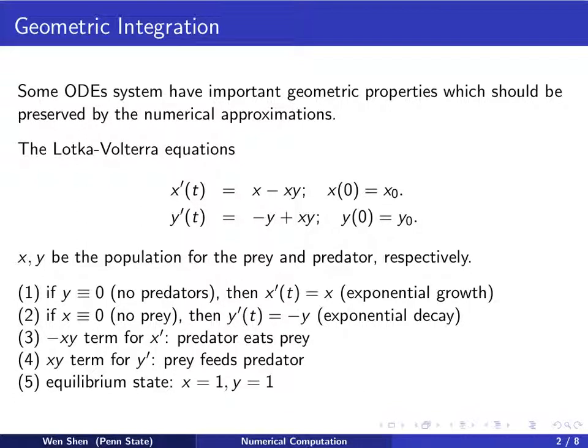And finally, there is an equilibrium state where x' and y' are 0, where the population will not change anymore. And we see that when x is 1, y is 1, that is an equilibrium state.